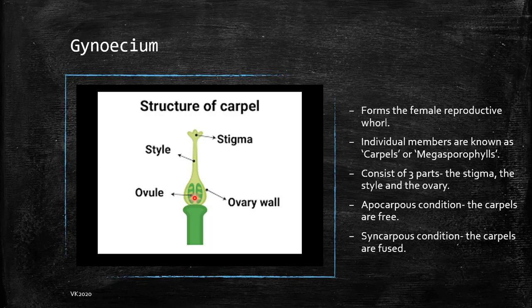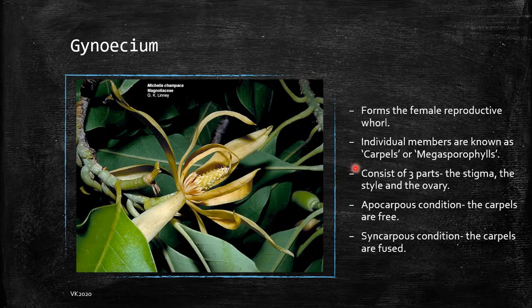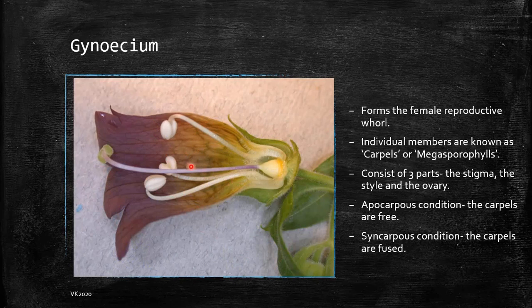There are two conditions associated with the structure of the carpel. The first is the apocarpous condition. In the champa flower, each carpel is separately visible — each carpel is free. This is the apocarpous condition. When we come to the syncarpous condition, all the carpals are fused. So this is the stigma, this is the style, and this is the ovary. The carpels are not individually observed — all of them have fused into the same tube, with different stigmas present. This is the syncarpous condition.